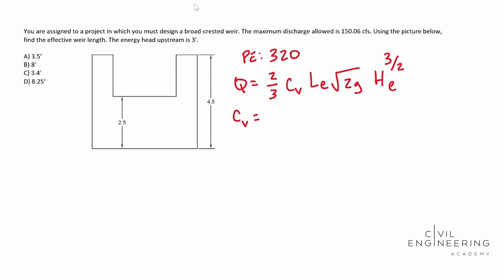The CV is going to be 0.602 plus 0.075 times big H over little h. Whenever you look on that sketch that it gives you on page 320, you'll notice that this guy up here is our big H, and this guy is our little h.